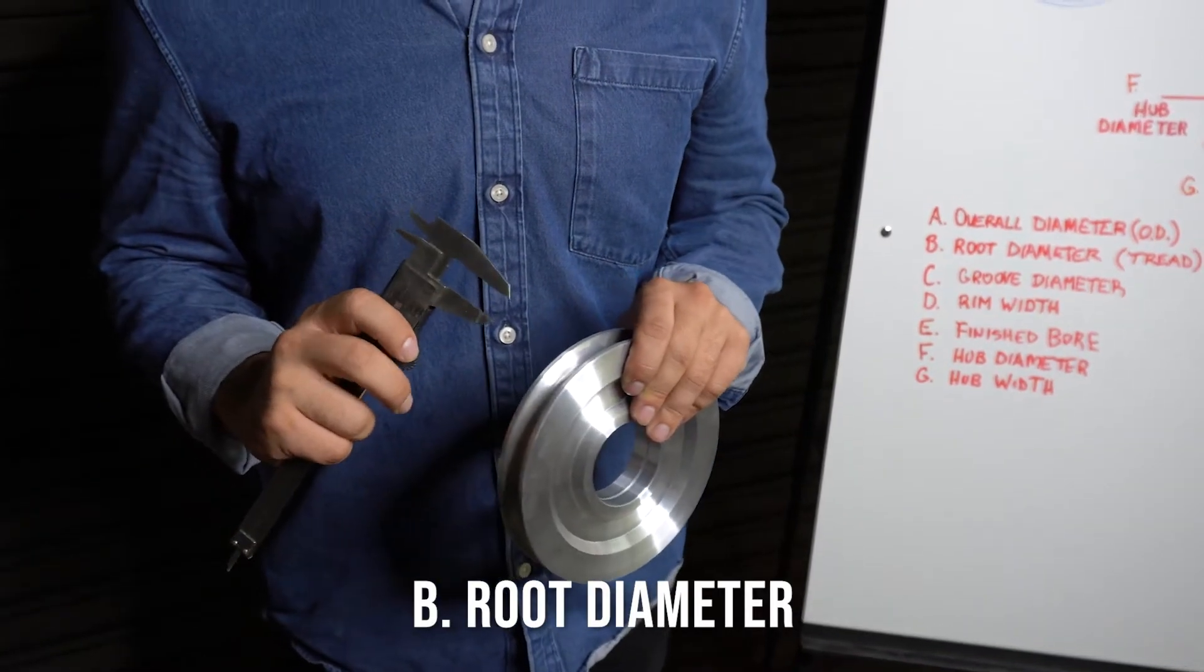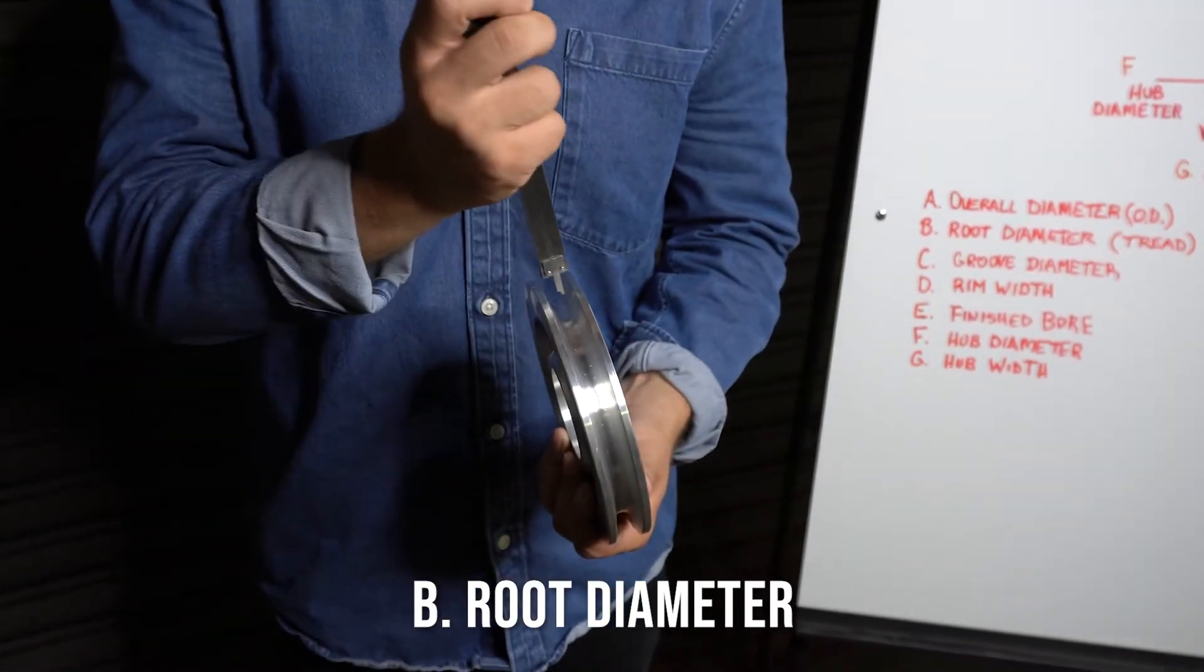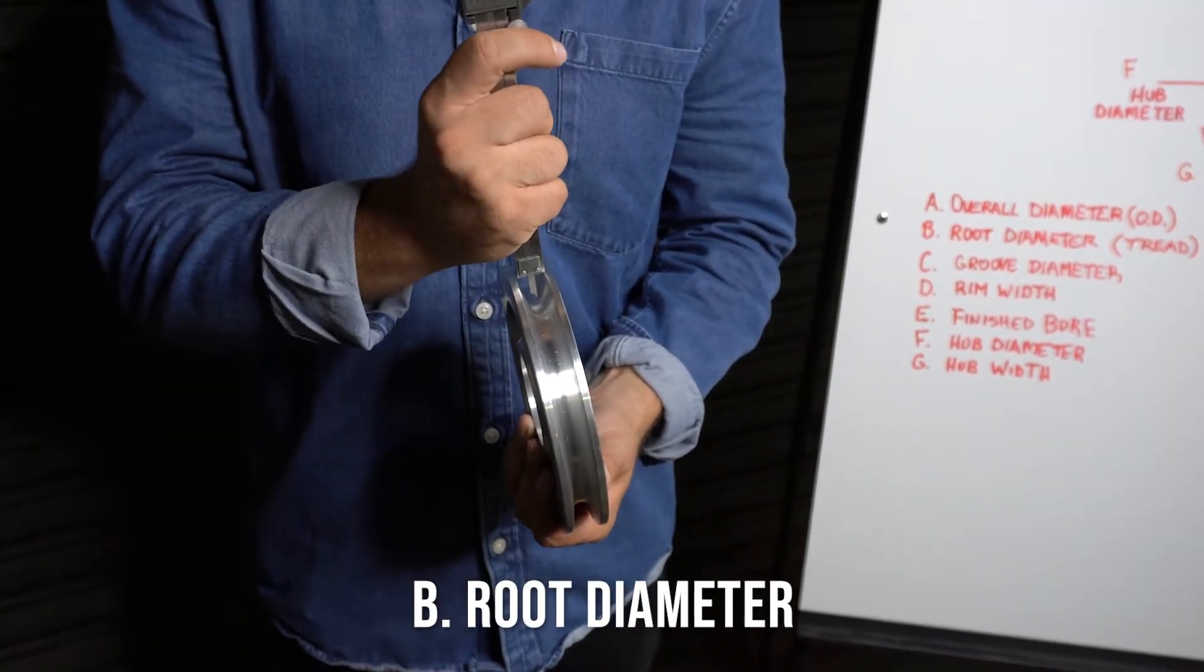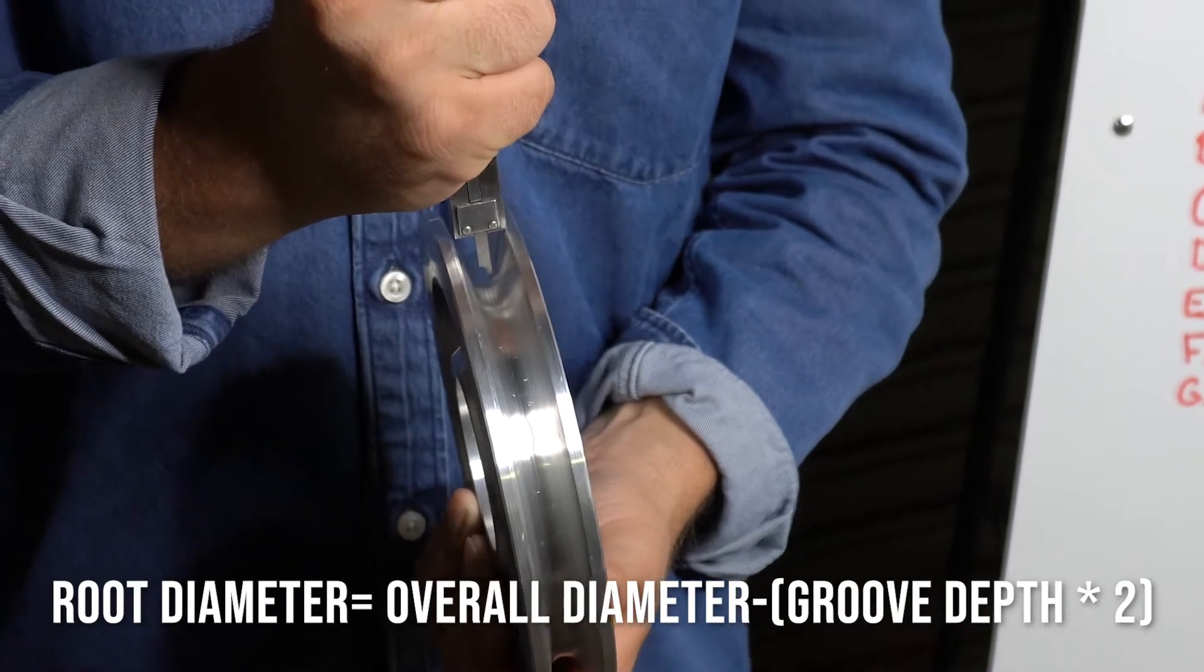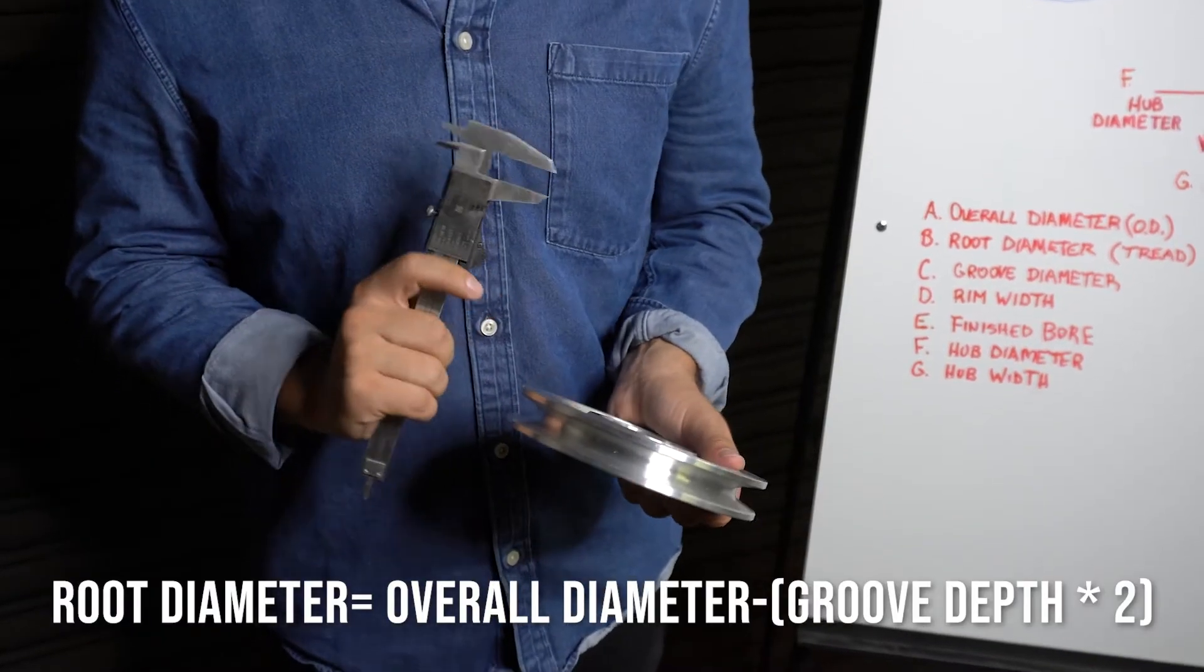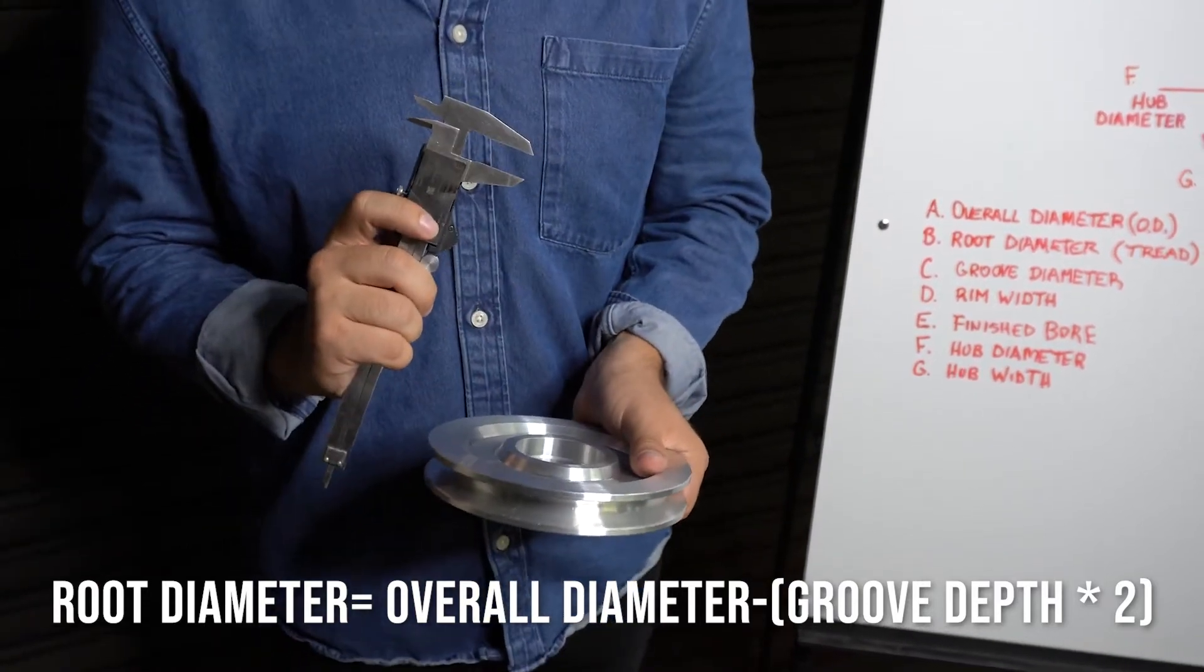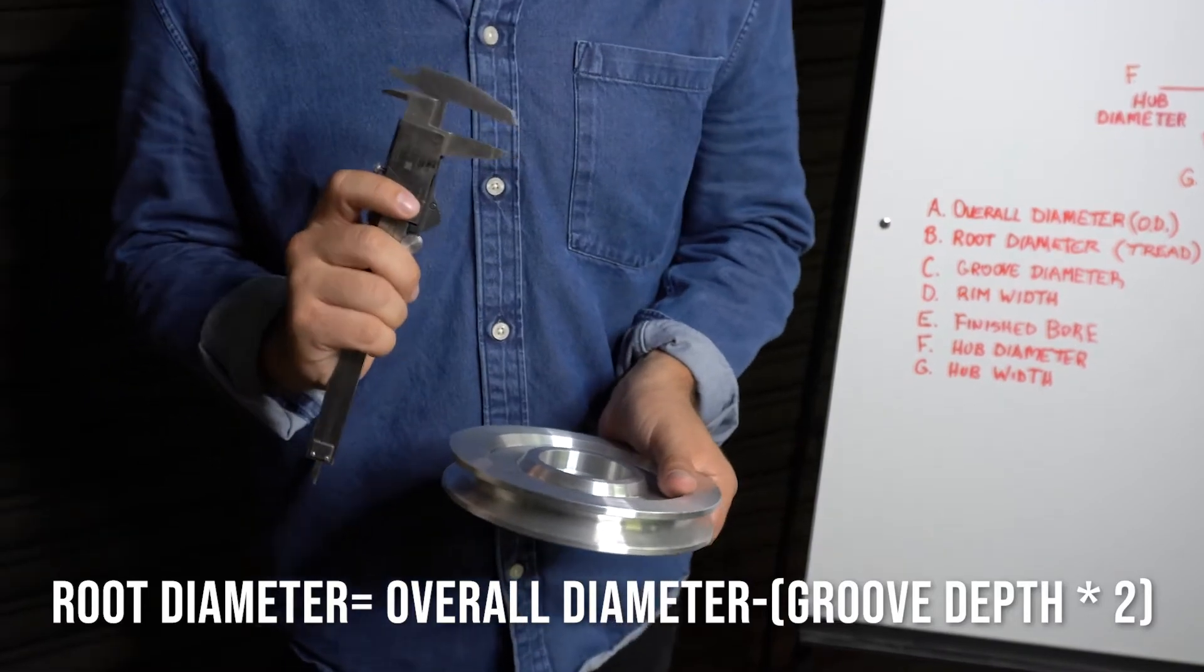There are several ways to get your root diameter. This one uses a caliper. You take the caliper and place it to the bottom of the groove and the top of the shiv until they line up. This is 0.5. Then you take that measurement and double it. It gives us one. And then we subtract that from the overall diameter. That will give you the root diameter.